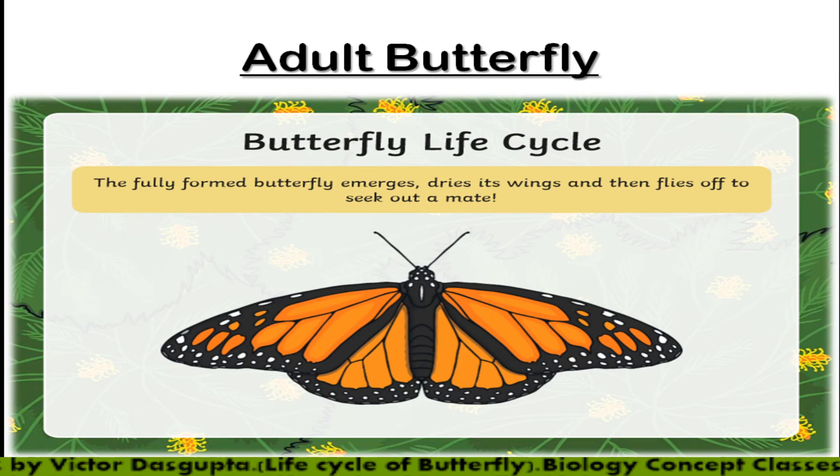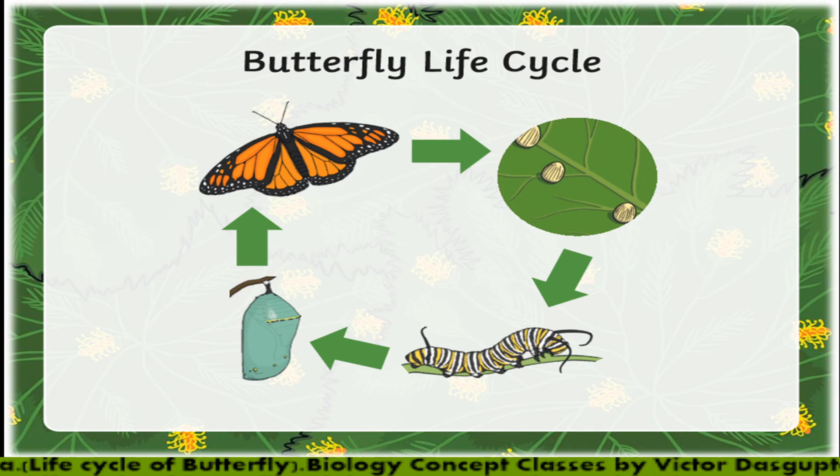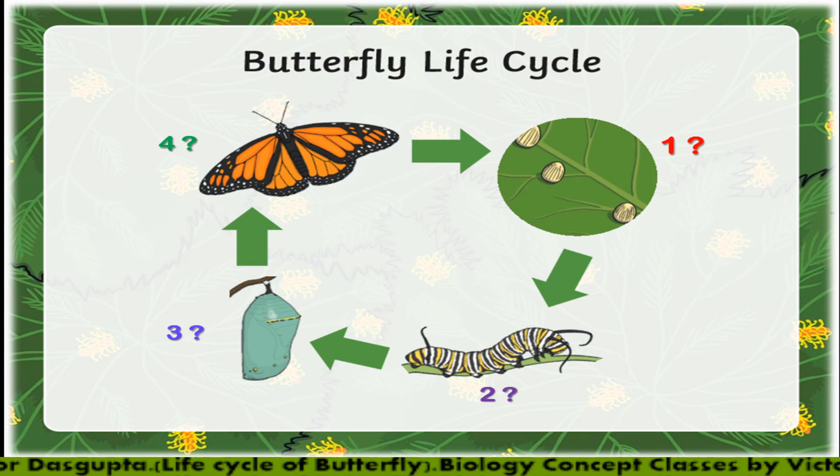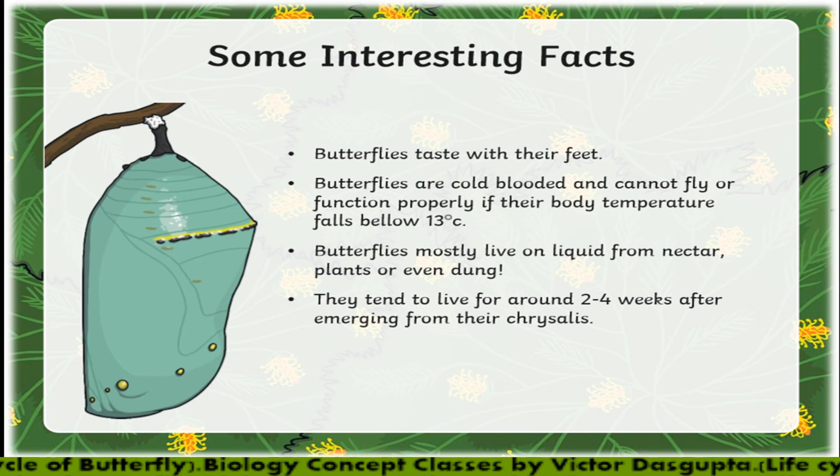Now after this discussion, tell me in the comment section below which stage is the first one, the second one, the third one, and the fourth one. Write the names of these stages — 1, 2, 3, 4 — in the comment section below.